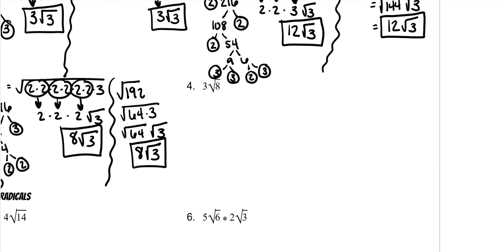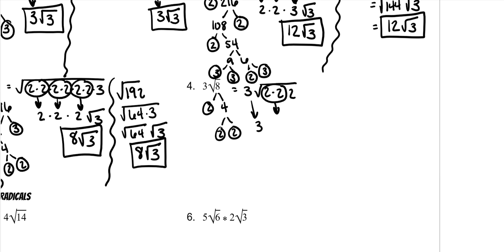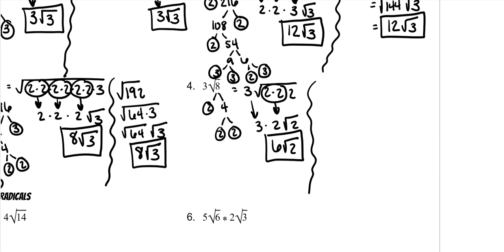It can also be done if there's a number on the outside. So 8 is still 2 times 4, and 4 is 2 times 2, which gives me 3 times the square root of 8 — which is 2 times 2 times 2. A 2 comes out, and then that 2 has to stay in. 3 times 2 is 6 square roots of 2. Or you could recognize that 8 is 4 times 2, so it's 3 times the square root of 4 times the square root of 2. The square root of 4 is 2, and 3 times 2 is 6 square roots of 2.